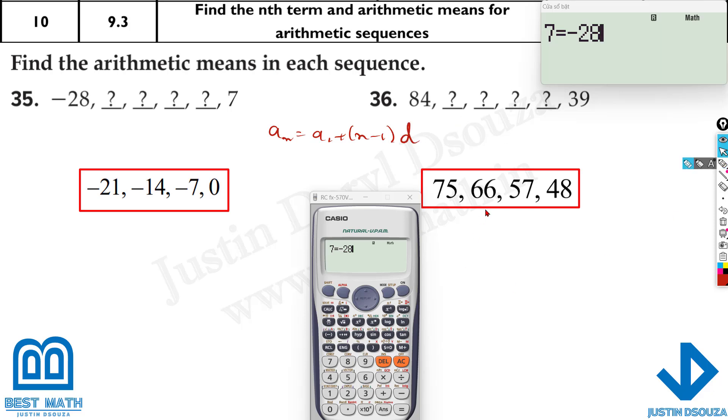It's better to write the formula a_n equals a_1 plus (n minus 1) times d. Now practice plenty of times. Then you can directly use the calculator and keep the formula in your mind and do it. So plus, now here again count the numbers. Number of terms: 1, 2, 3, 4, 5, 6. Everywhere it's 6 terms.